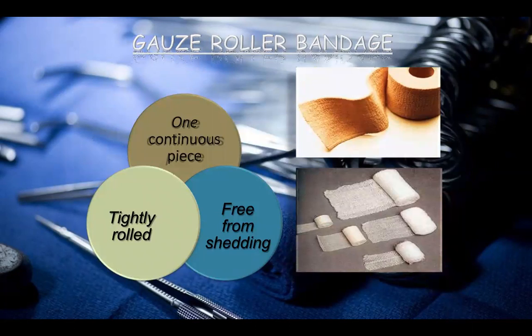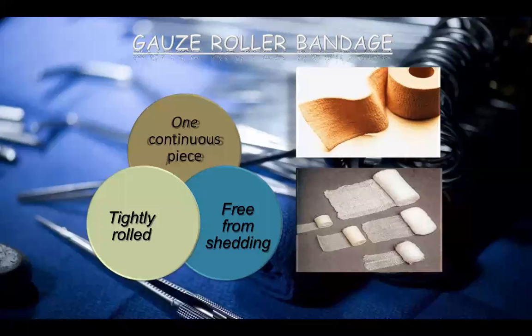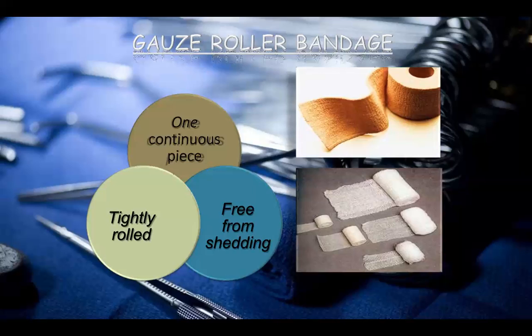The gas roller bandage is a continuous piece of gauze cloth, tightly rolled. As seen in the picture, it is in continuous form. For commercial packing, these are tightly rolled and free from shedding — they do not shed any material. They are fixed over the area where needed.